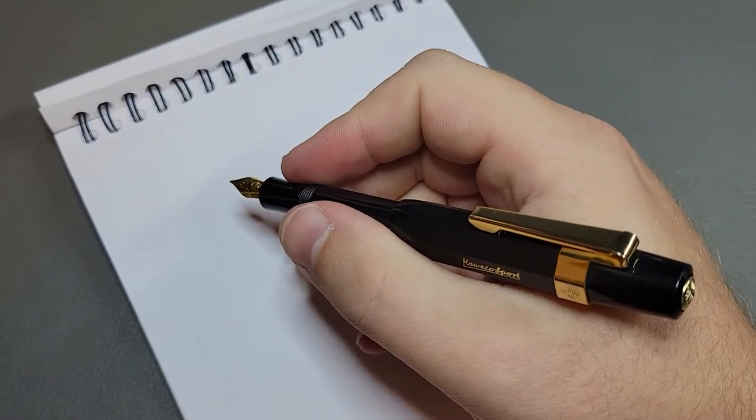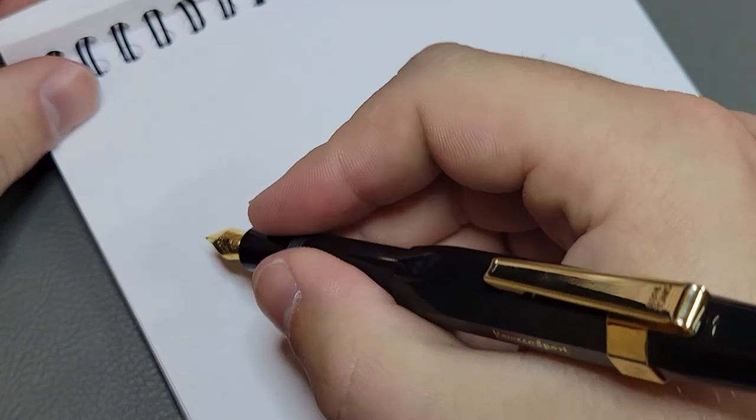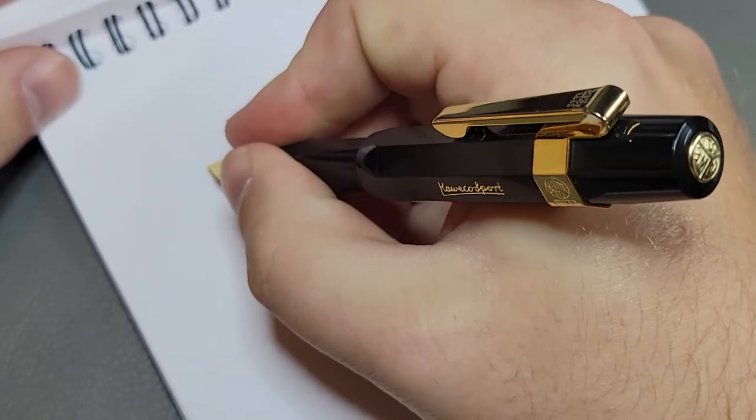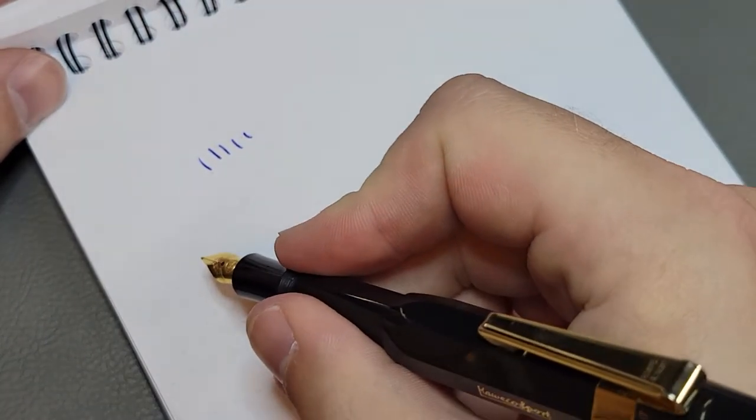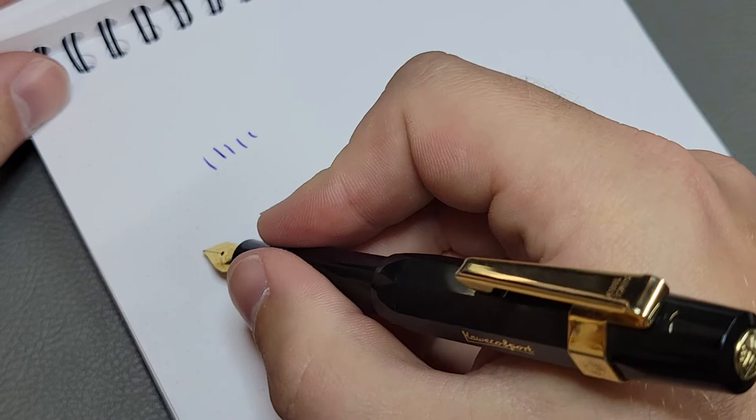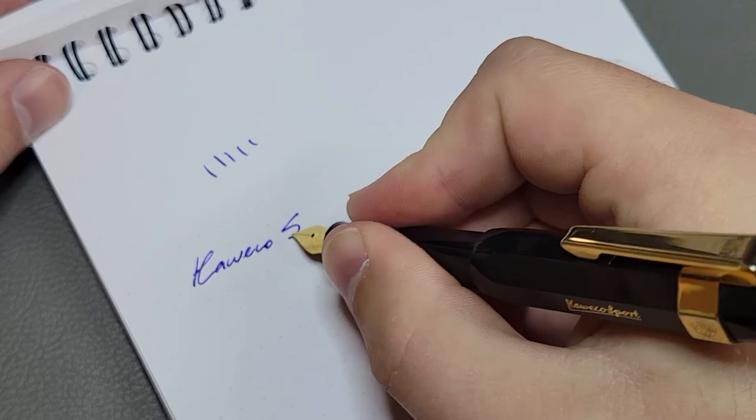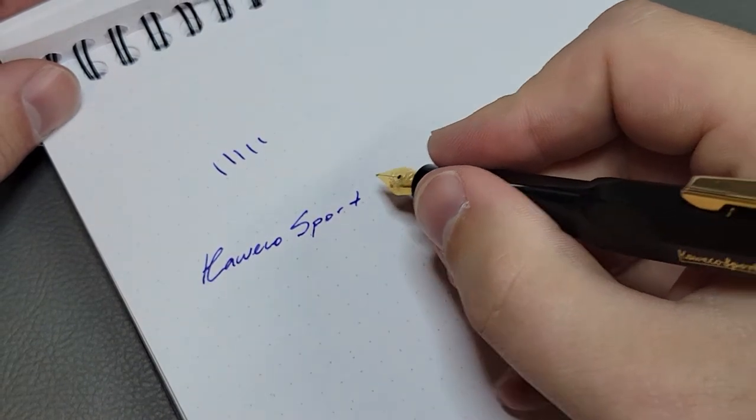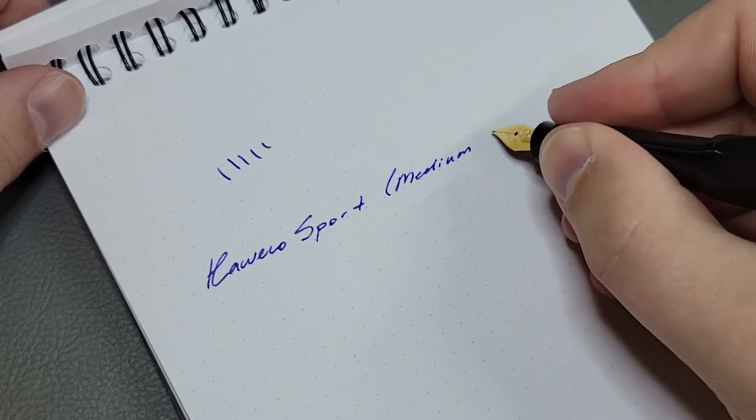Let me zoom in so you can see what I'm writing. I'm going to start here and we're going to hope this pen starts writing. You might have to give it a little press to get it started but there it goes. We'll start a writing sample here. So today we have the Kaweco Sport, just the black standard model, and the nib itself is a medium steel nib.